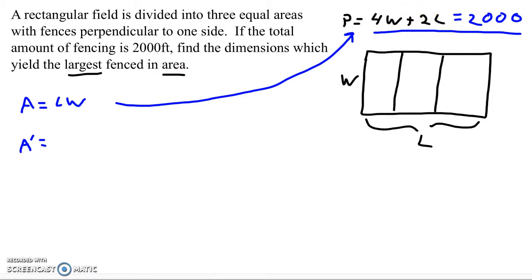It makes no difference whether you solve it for W or for L. Since I have two Ls, I'm going to solve it for L, but it really doesn't matter, right? 2L would be 2,000 minus 4W. And if you divide everything by two, you get L equals 1,000 minus 2W. We're going to take this and plug it into this equation over here.